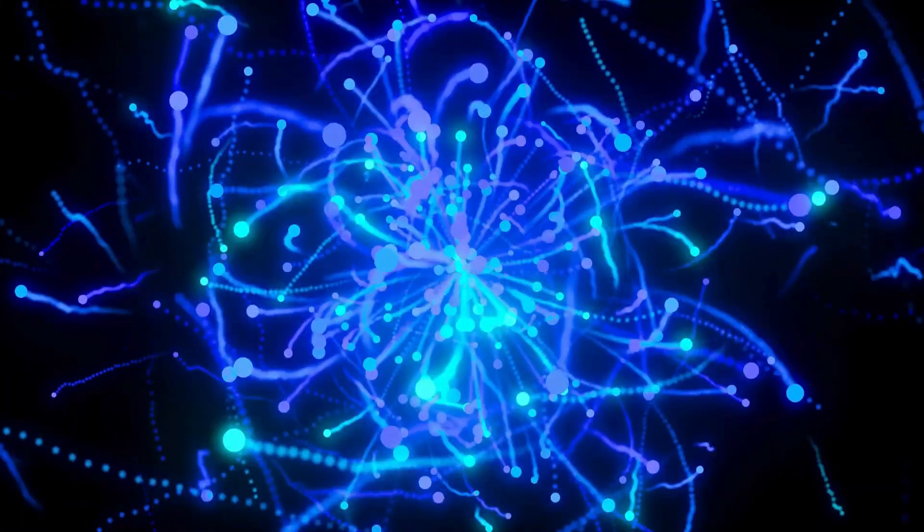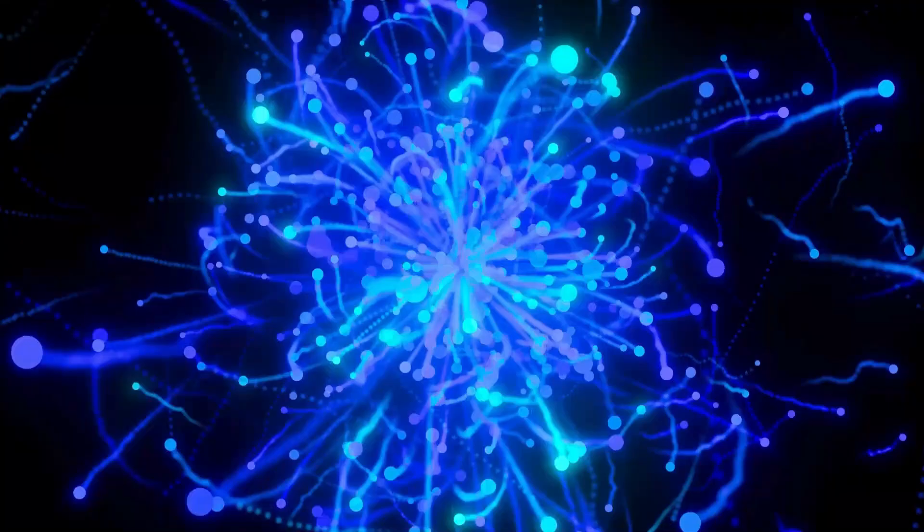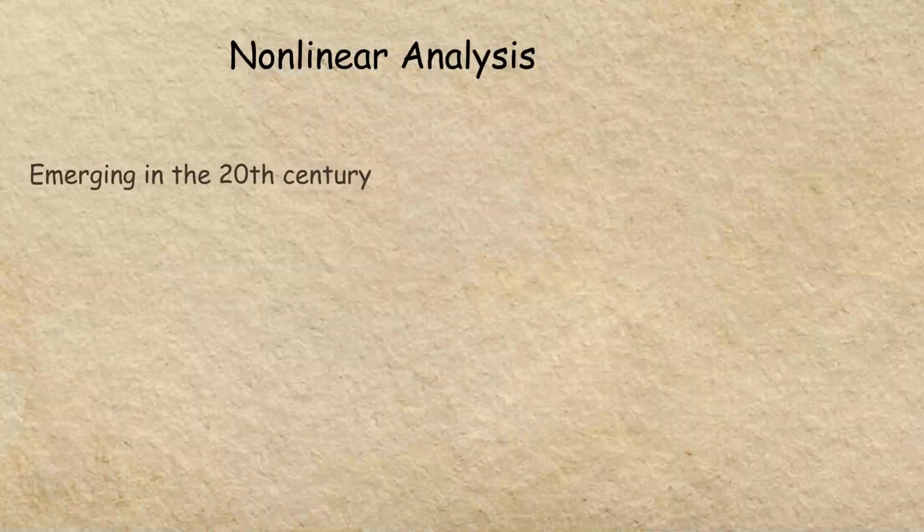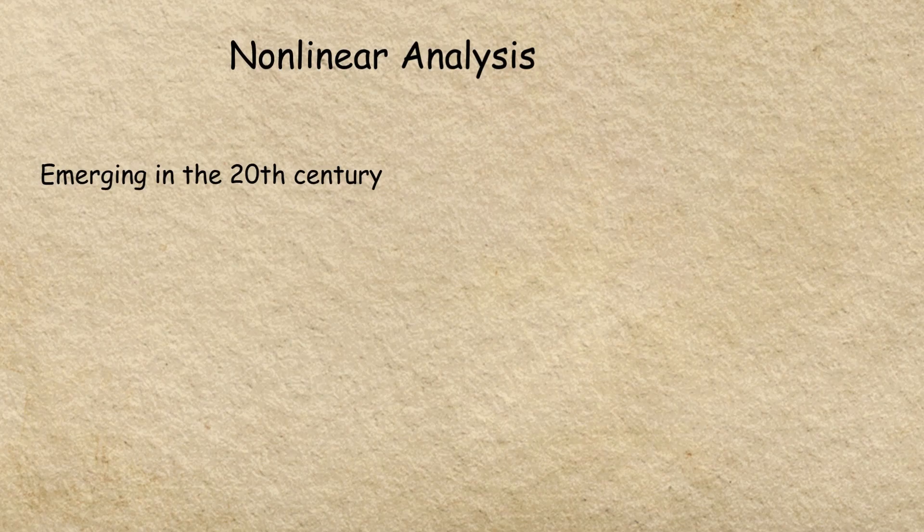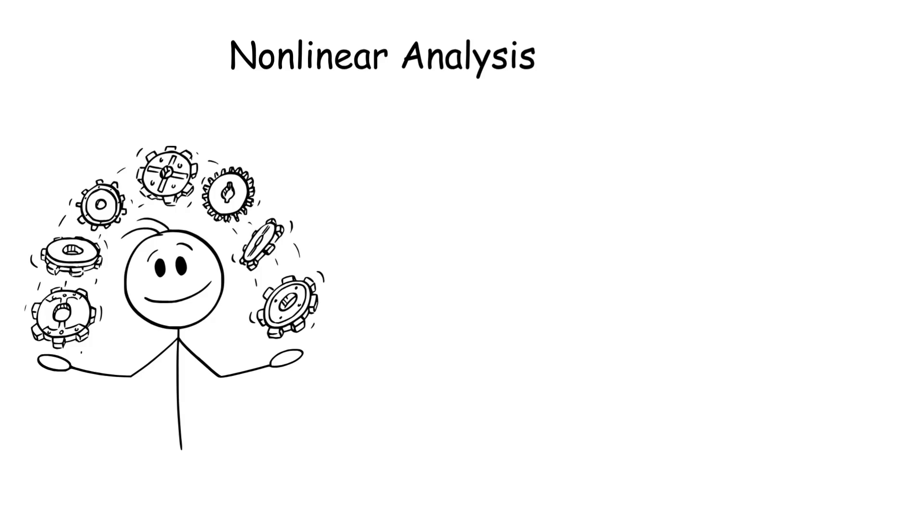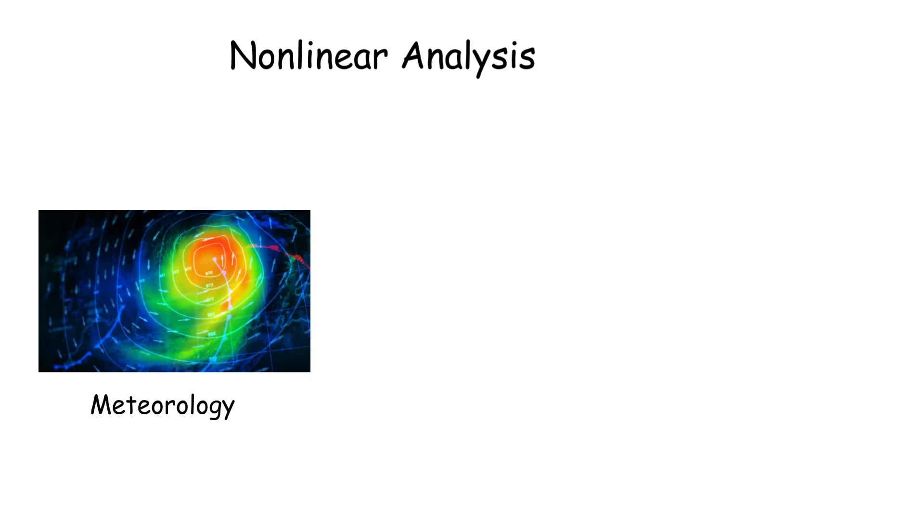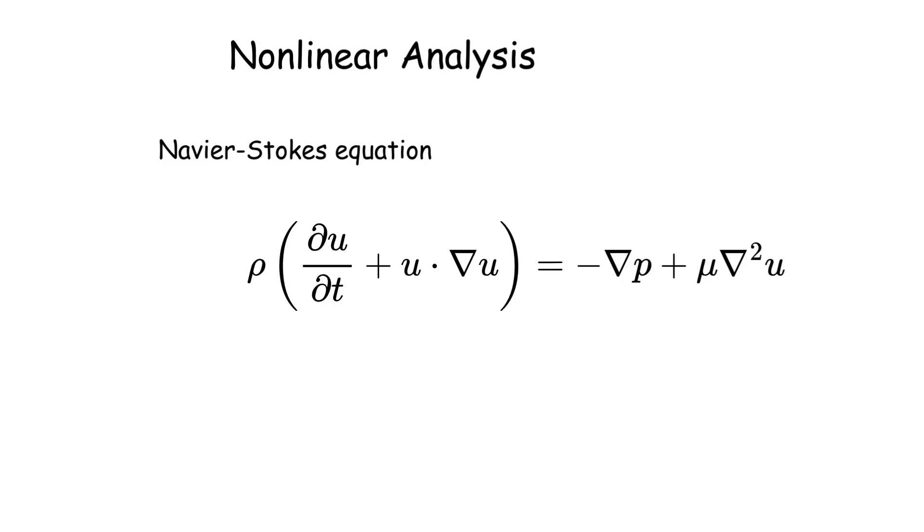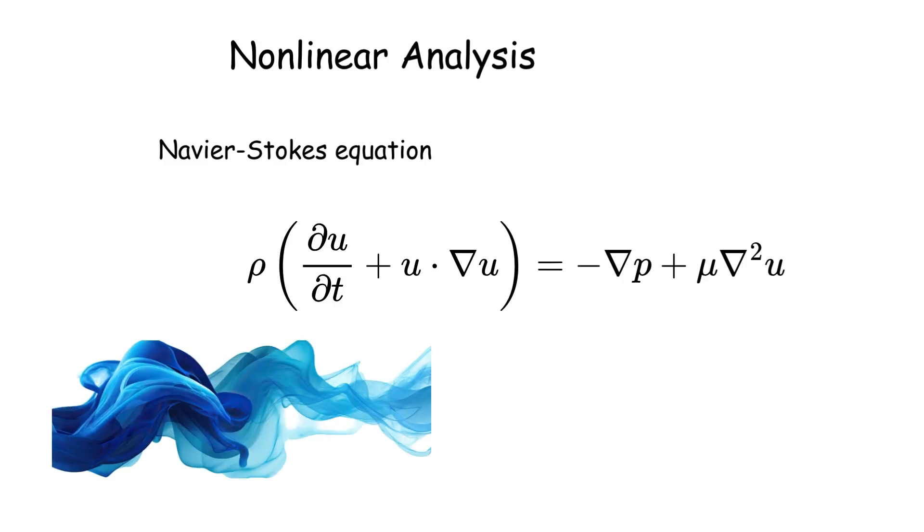Nonlinear analysis tackles systems where outputs don't scale linearly with inputs, like turbulent fluids or chaotic pendulums. Emerging in the 20th century, it uses tools like fixed-point theorems and bifurcation theory. Key concepts include nonlinear PDEs, chaos, and stability analysis. It's vital in meteorology, biology, and economics, where systems behave unpredictably. For example, the Navier-Stokes equations model fluid flow but resist complete solutions.